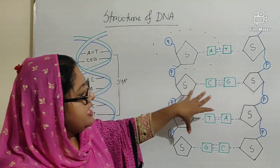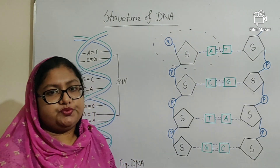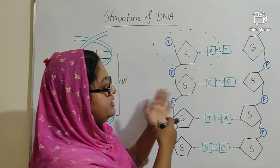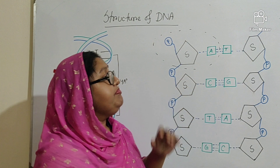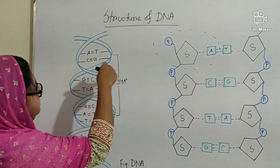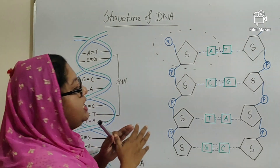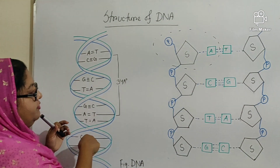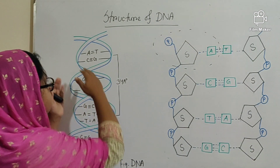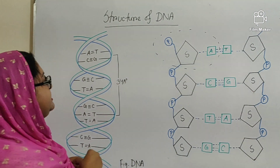This is the chemical structure, and this is the physical structure — it is a twisted double helical structure. That means it forms a twist like this. When we unwind this structure, it appears like this. This diagram indicates the DNA; this is the physical structure of DNA. The two strands are anti-parallely arranged, and the diameter between these two rings is 20 angstroms.